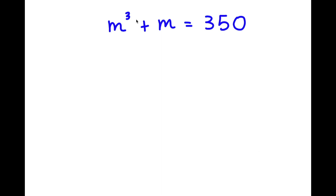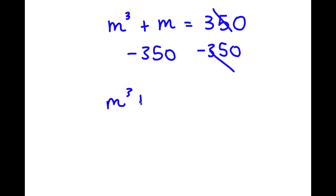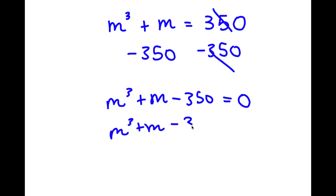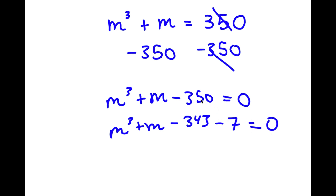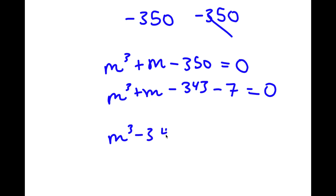In this problem, I have m to the power of 3 plus m is equal to 350. The first thing I'm going to do is subtract 350 on both sides. So these two cancel out, and now I have m cubed minus 343 plus m minus 7 is equal to 0.